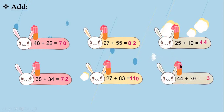44 plus 39: I will add ones with ones and tens with tens. 4 plus 9 — 9 in my mind and 4 on my fingers. After 9: 10, 11, 12, 13. I will write 3 and carry up 1. Now 1 plus 4 equals 5, then 5 plus 3 — 5 in my mind and 3 on my fingers. After 5: 6, 7, 8. So 44 plus 39 equals 83.